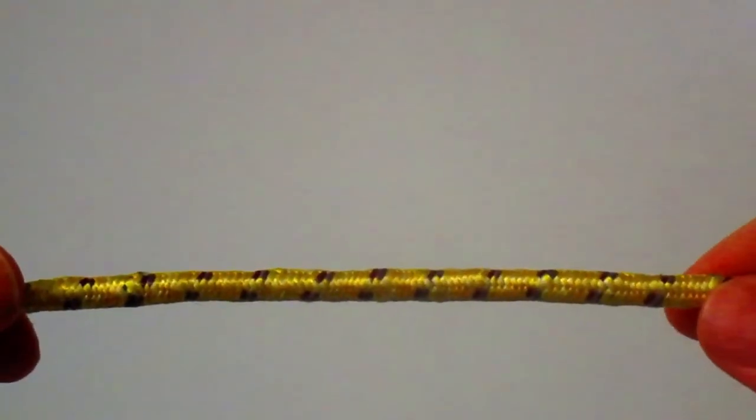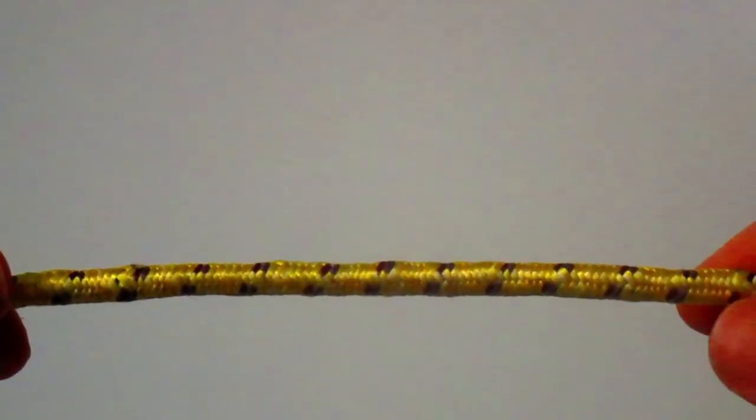A neat trick that you could do to tie the Clove Hitch is prepare the rope first with two loops and then slide the pole through the loops.